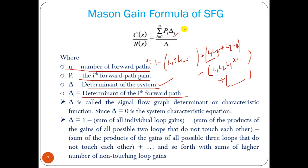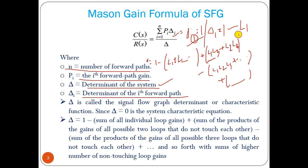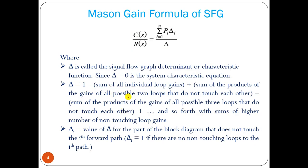Delta_i equals 1 if all loops are touching the i-th forward path. If that is not the case, then delta_i equals 1 minus the gain of the loop which is not touching with that forward path. This is how we can find out Mason's gain formula and all its components.